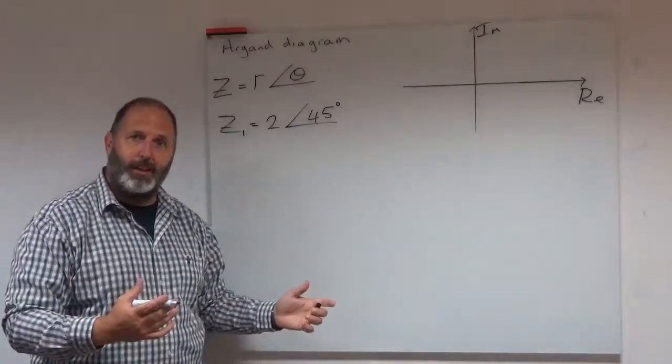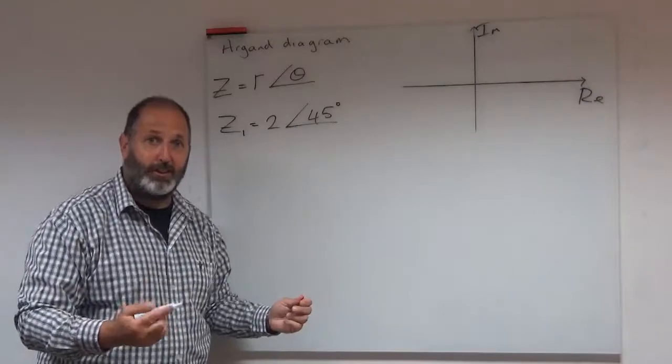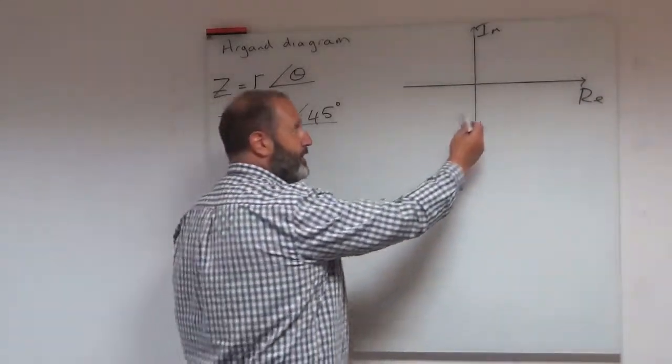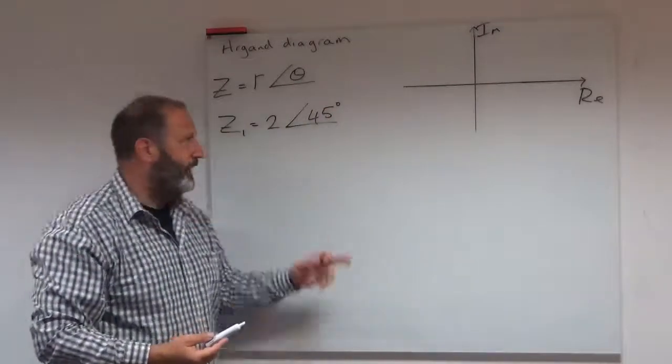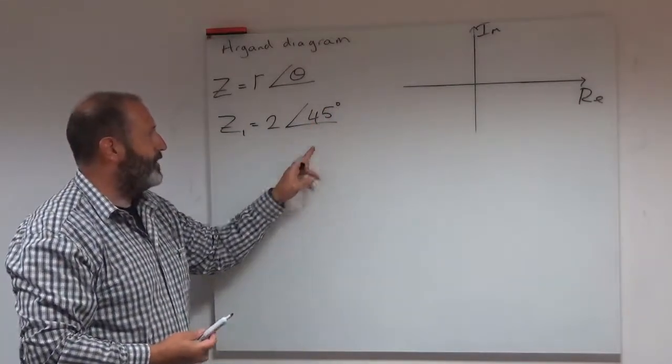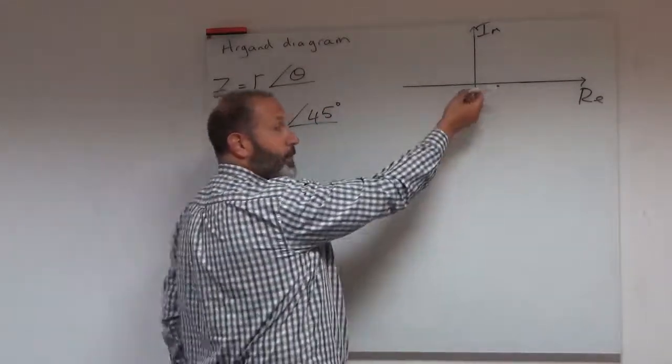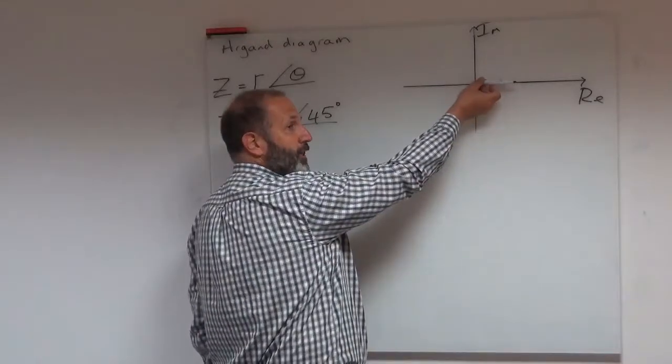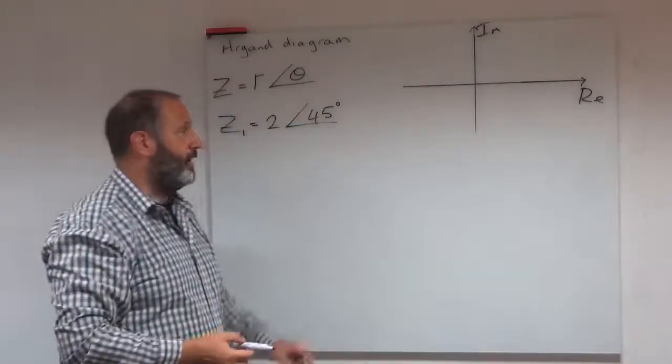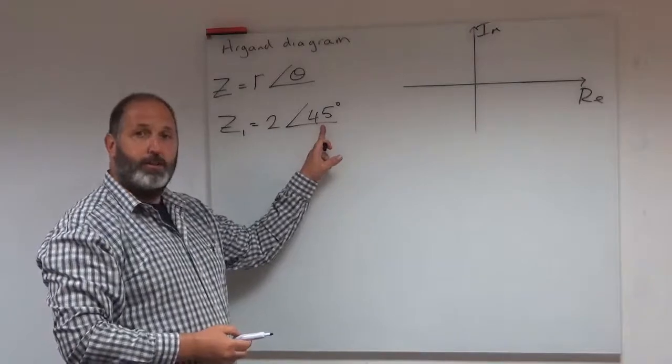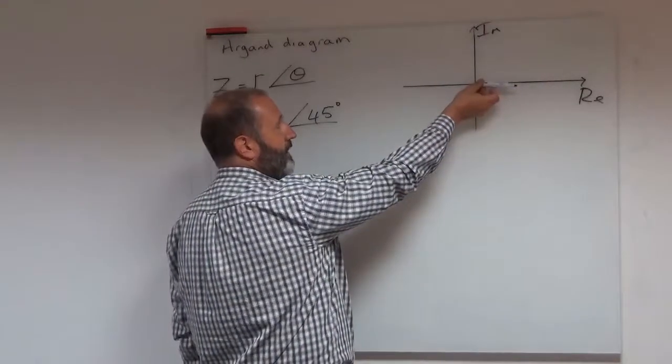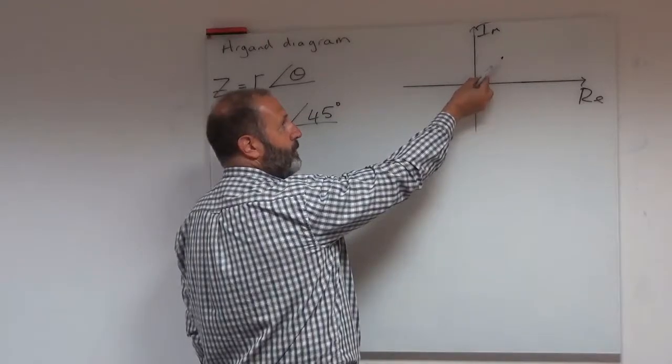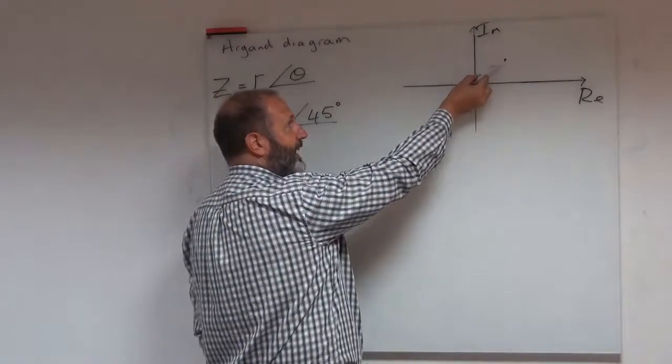Well, in some of the previous videos we looked at Cartesian form and essentially we went so many across and so many up or down. In this case, I'm going to start off on the positive real axis like so and I'm then going to go anti-clockwise by 45 degrees. So I start here, I go anti-clockwise by 45 degrees to get to there.